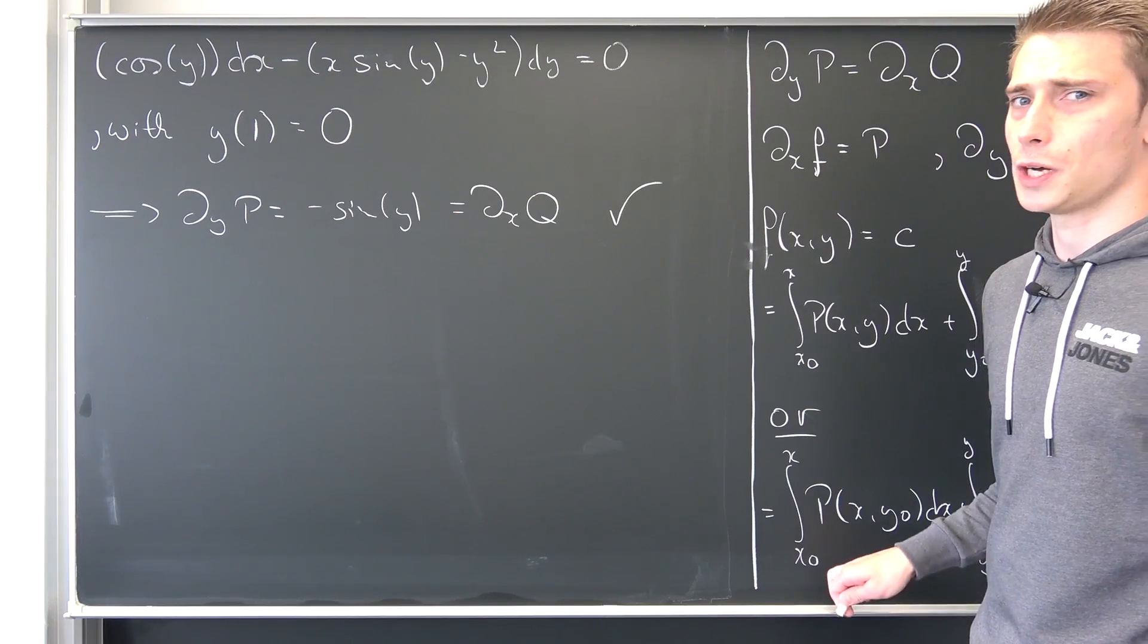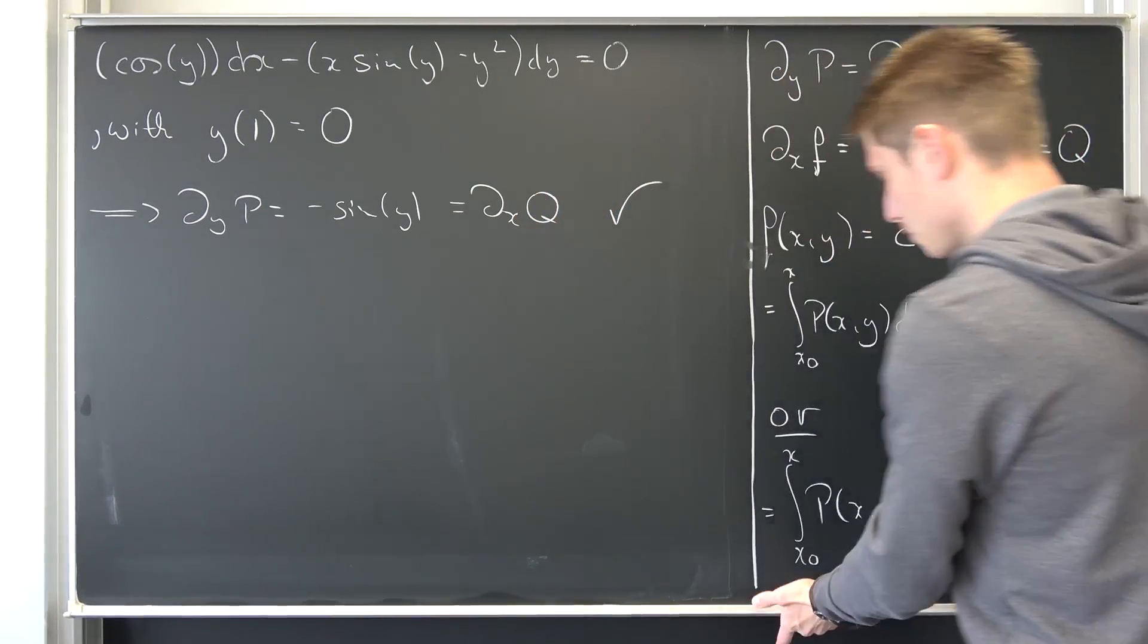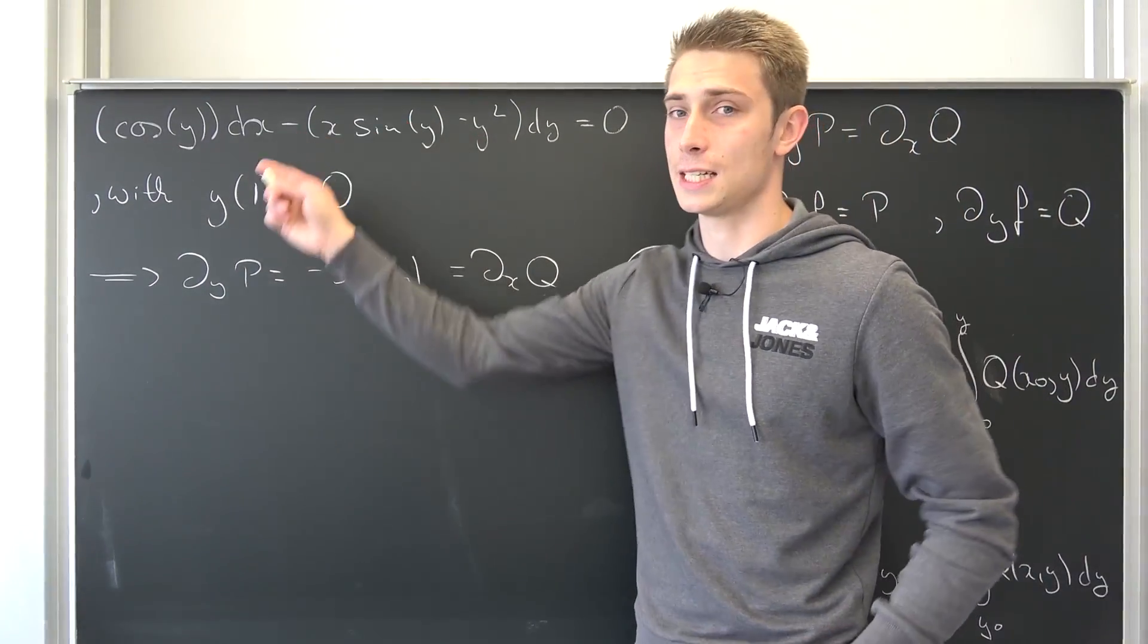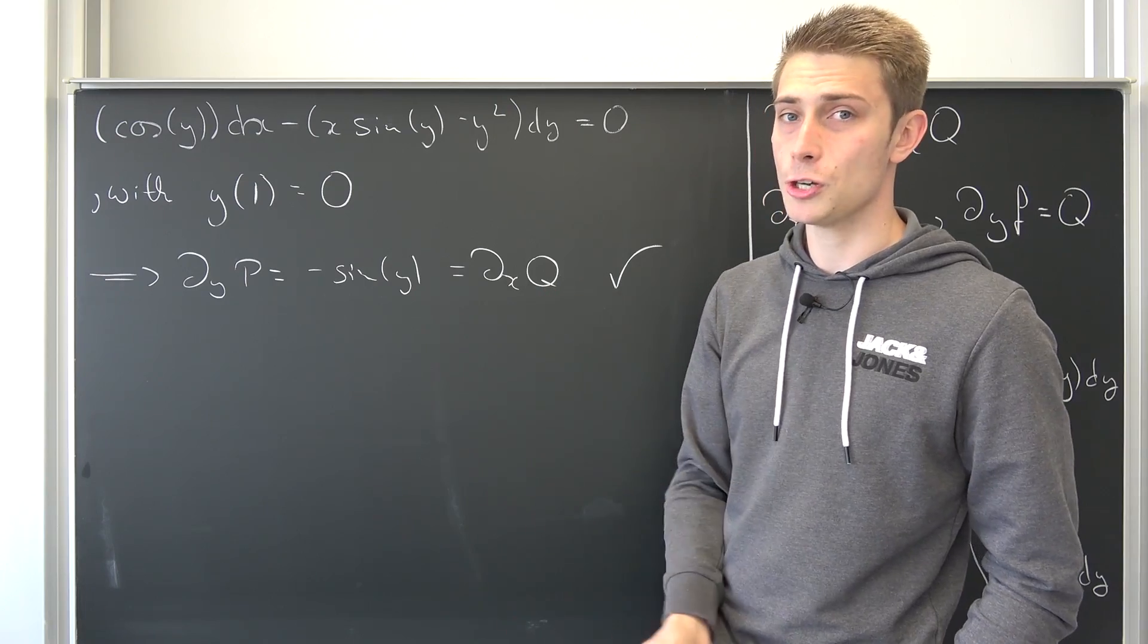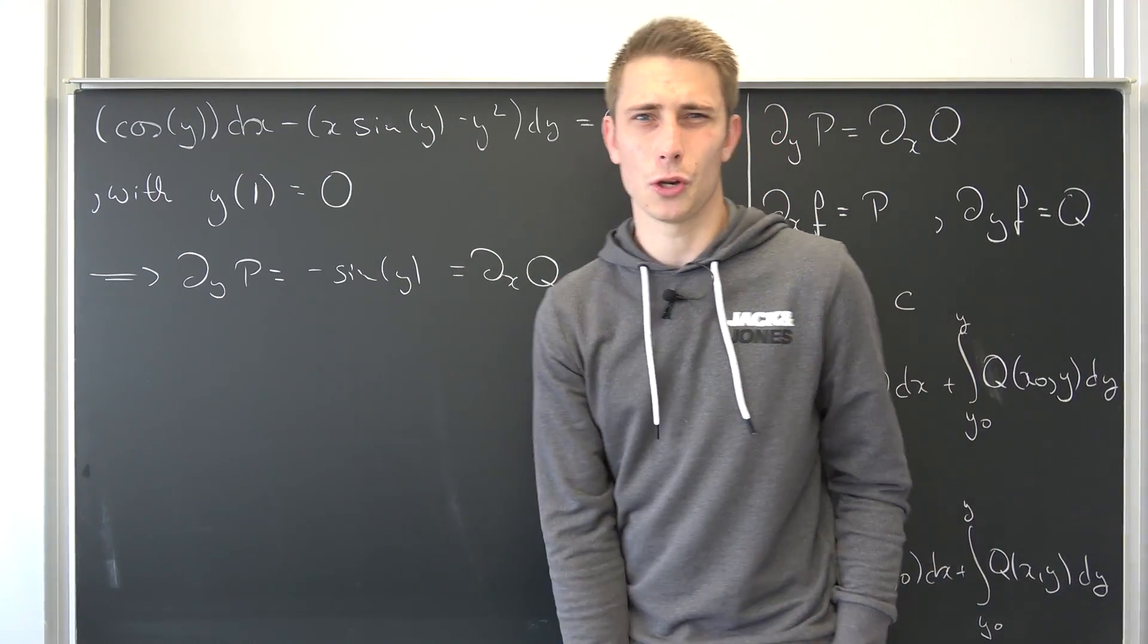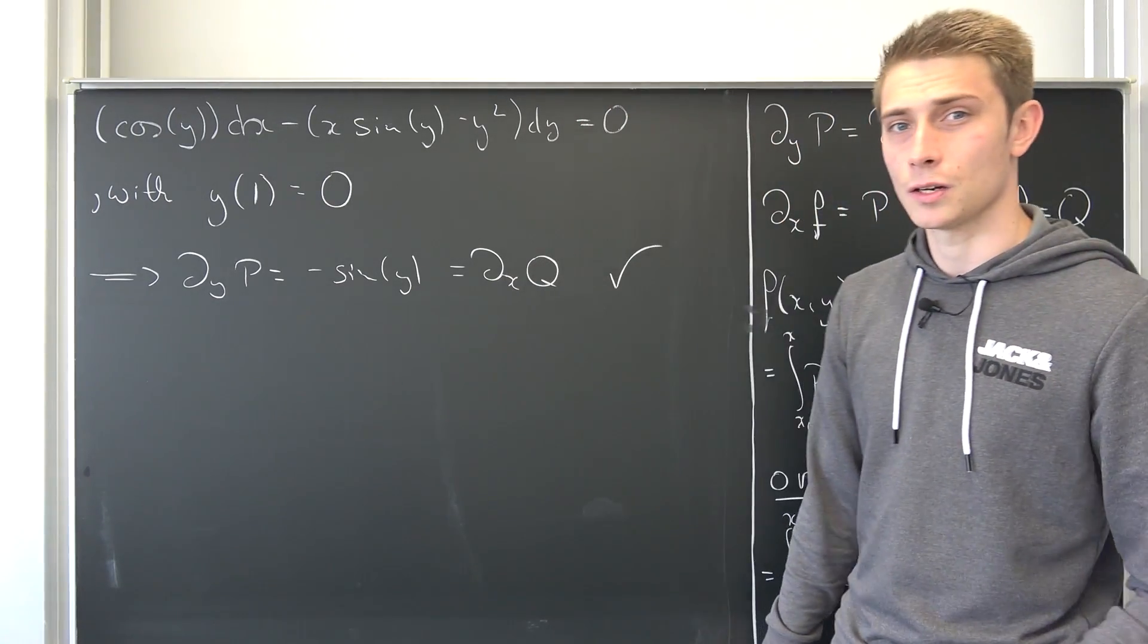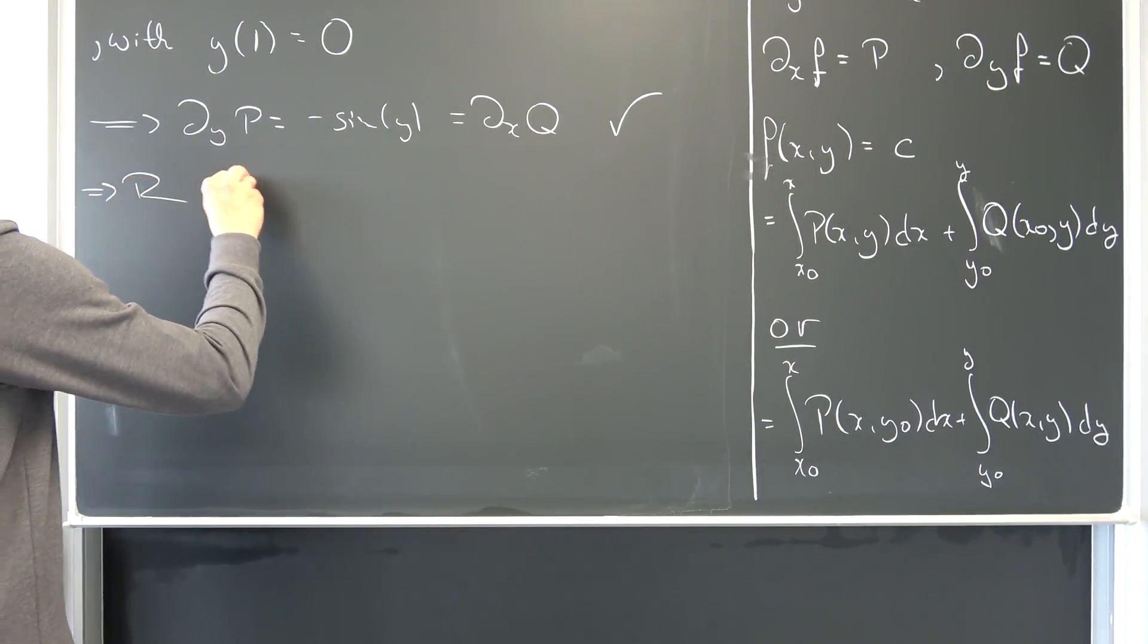Now once again, we have to think about our region and what you have to think about here is basically if any pair of initial values, you can say points in our rectangle that we are going to choose, are going to cause any problems for our function that we have right here. Good thing is our cosine of y and sine of y are defined for whole R. They converge for each and every value in our R^2, and the rest are just simple polynomials. So there's not a problem here. We can choose our region as the whole R^2.